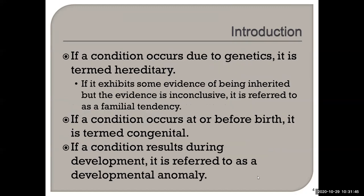If a condition occurs due to genetics it is termed hereditary. If it exhibits some evidence of being inherited but the evidence is inconclusive, it's referred to as a familial tendency — for example, missing permanent lateral incisors. If a condition occurs at or before birth it's termed congenital. If a condition results during development it's referred to as a developmental anomaly.